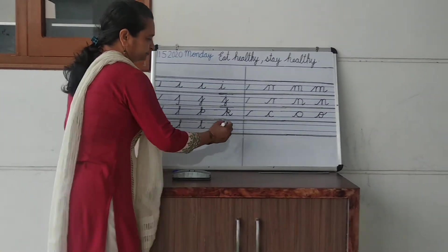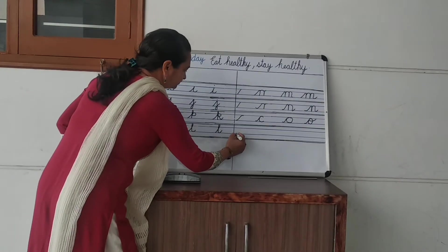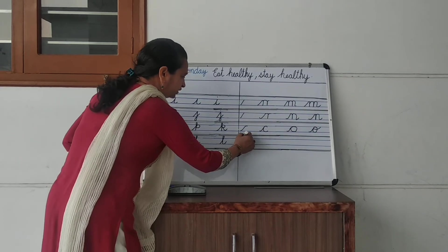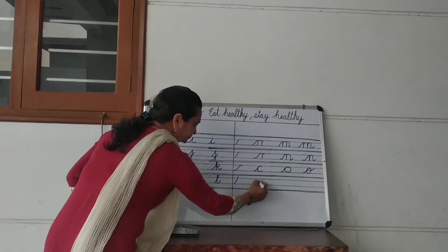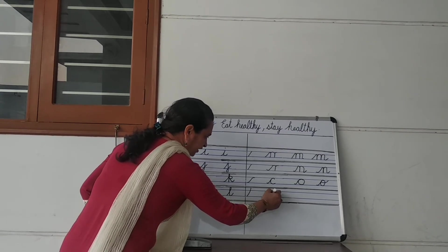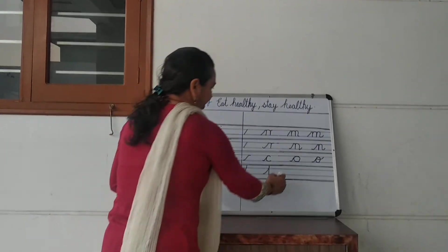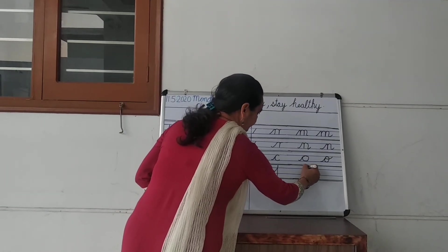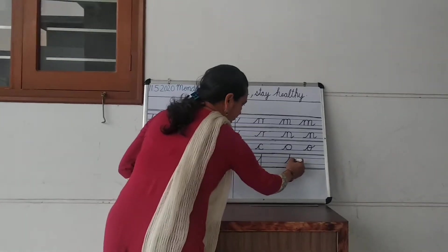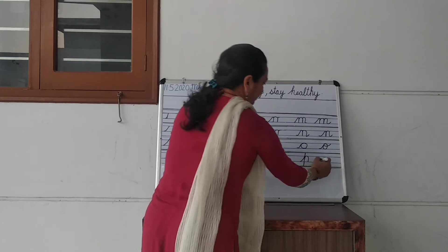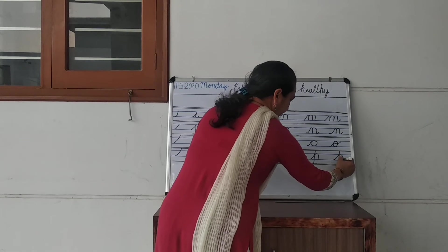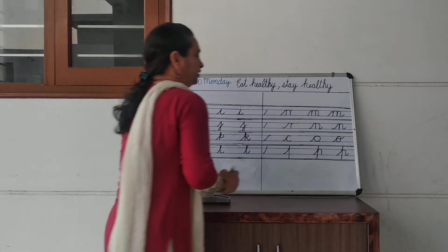Last letter is p. Small p is written across four lines. First step: go up. Second step: from the red line, come down till the red line again. Come down and then come back on the first blue line. Last step of p: come back, then turn and make a tail. That's p.